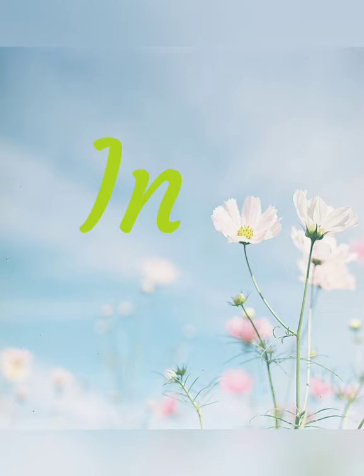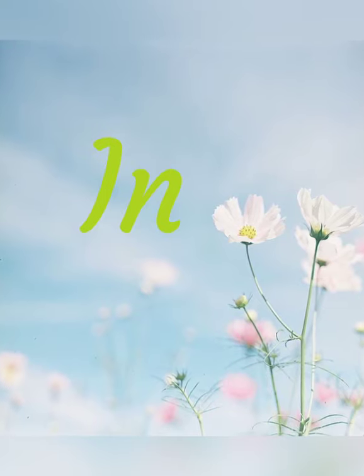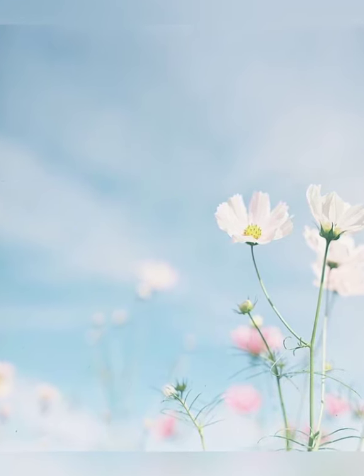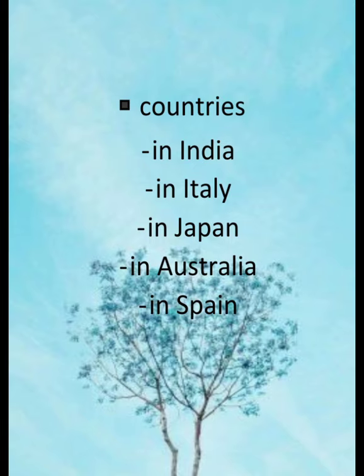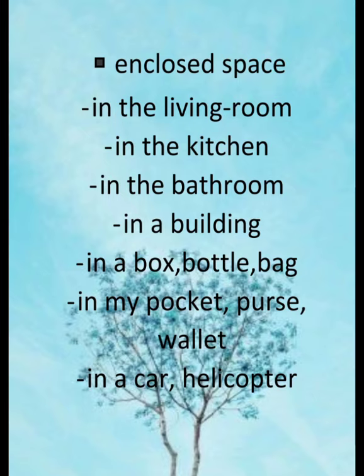Next we have 'in.' 'In' tells us that the person or object is inside something — that is, it is surrounded or closed off from all sides. When do we use 'in'? First, we use 'in' for cities: in the city. For countries, we say: in India, in Italy, in Japan, in Australia, in Spain.